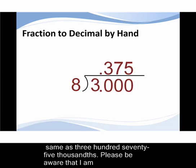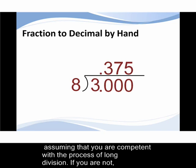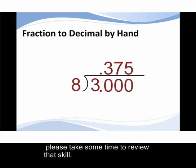Three eighths is the same as three hundred seventy-five thousandths. Please be aware that I am assuming that you are competent with the process of long division. If not, please take some time to review that skill.